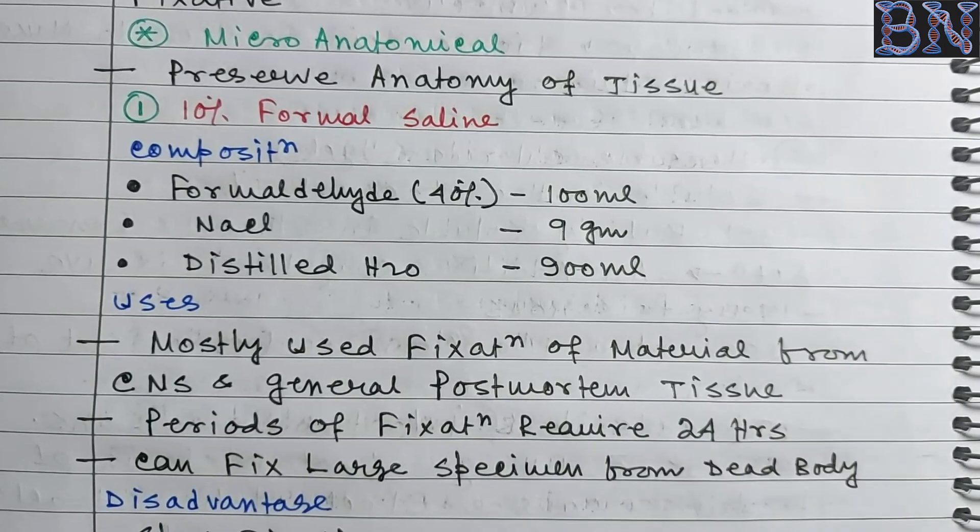The fixative gives brilliant staining results. The Heiden-Hyne Suza fixative composition is: mercury chloride 45 g, NaCl 5 g, trichloroacetic acid 20 g, glacial acetic acid 400 ml, formaldehyde 40% — 200 ml, and distilled water 800 ml.